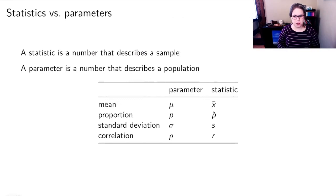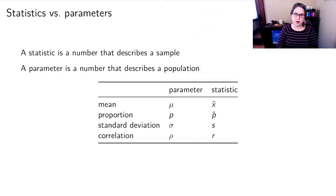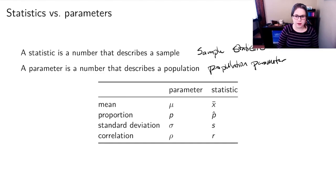And we have some terms, I think I've given these to you before. There's the idea of a statistic, which is a number that describes a sample, and a parameter, which is a number that describes a population. So it's got a little bit of a mnemonic device, a sample statistic, and they both start with s, and then a population parameter, and they both start with p.